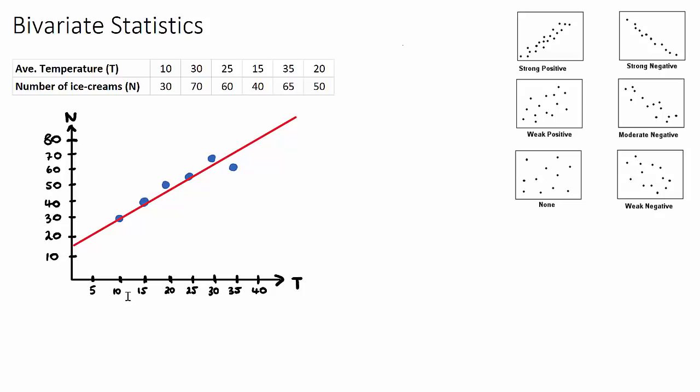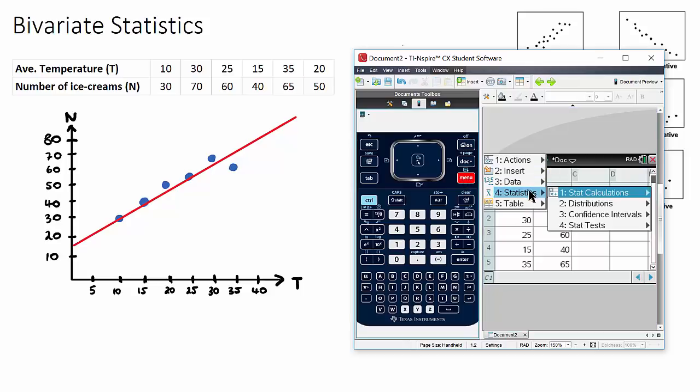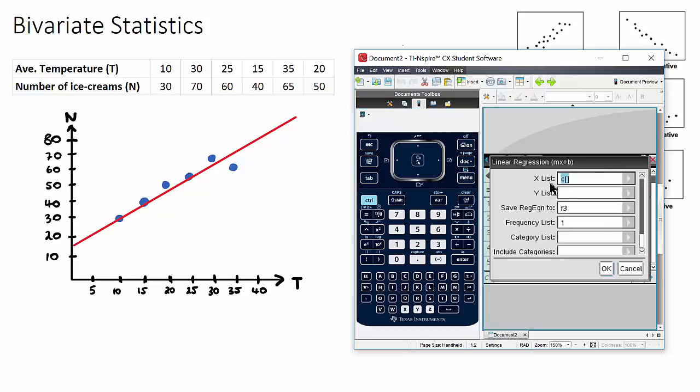Let's get our calculator out, this is how we do it. We want to have our variables in here so I have T for my temperature with all my temperatures here and N for my number of ice creams. If you have this calculator, the TI-Inspire, you can go to menu, statistics, stat calculations, and we're looking for linear regression. We can choose either mx plus b or a plus bx. I like to use mx plus b because this is the equation of a straight line that we're used to seeing, y equals mx plus c.